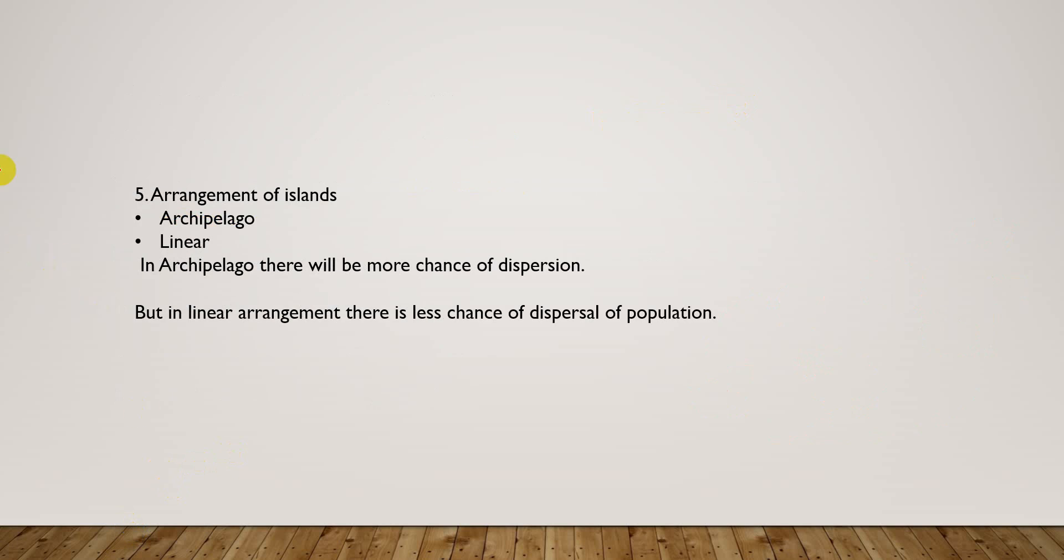Now, the arrangement of islands: here is archipelago and linear. Archipelago means islands that are arranged in clusters, and linear means in a straight line. Let me show you - archipelago is in a cluster like this, and linear...